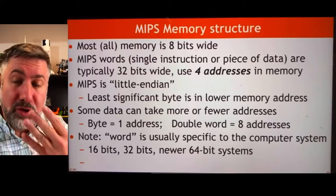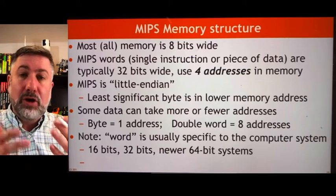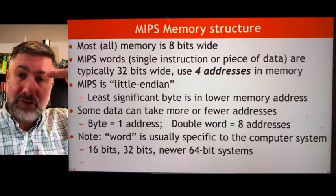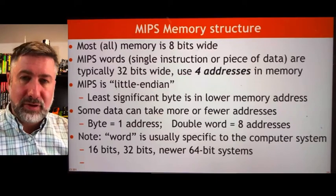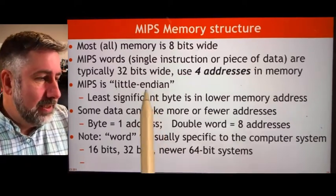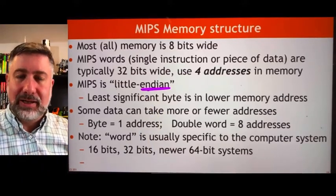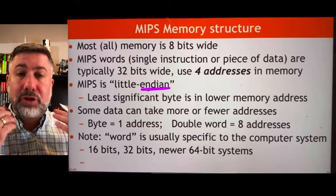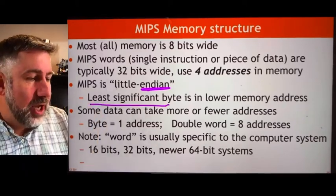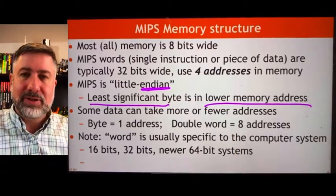Because we have to load four things to get one full word, we have to know whether we're loading the least significant byte first or the most significant byte first. We use the term endianness to specify this. For MIPS, it's little-endian, so we load the little end first — the least significant byte of a four-byte word is stored at the lower memory addresses.